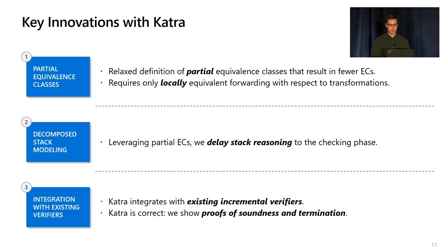Our key contribution with this work with Katra was surmounting this challenge and significantly speeding up real-time verification when you have complex transformations, particularly for networks with layering. Our key ideas are twofold. Number one, we get rid of this idea of full equivalence classes and introduce a new idea called partial equivalence classes, which are only required to have locally unambiguous forwarding rather than globally unambiguous forwarding. There are often way fewer of these partial equivalence classes than full equivalence classes, so we save a lot of work when doing new checks.